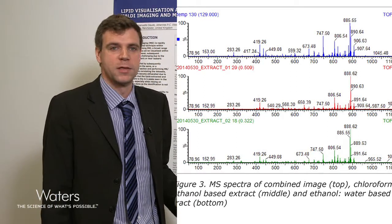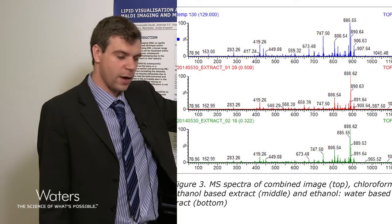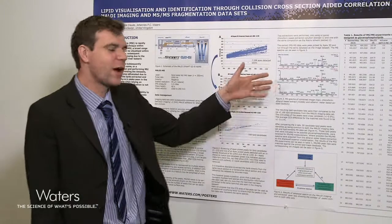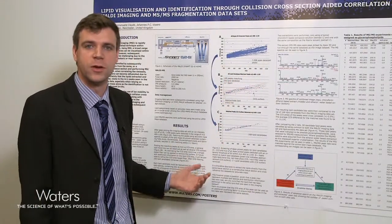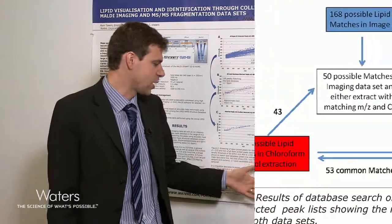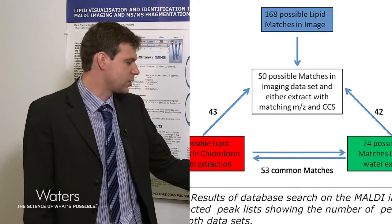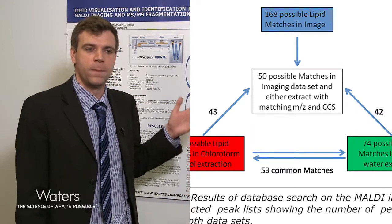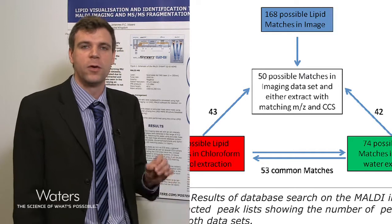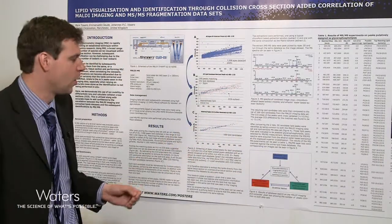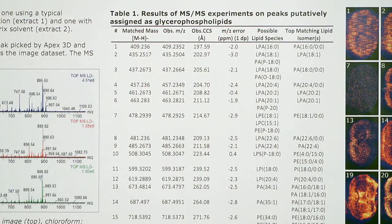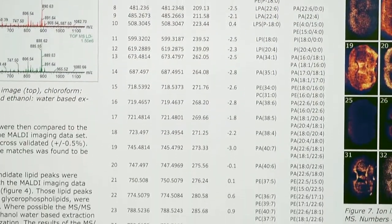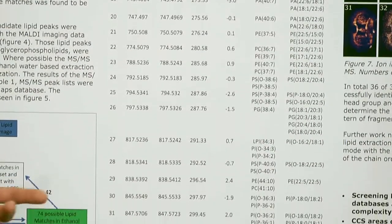Having extracted the lipids, we ran them by MS/MS. At the top we have the imaging MS spectrum, and below that extract 1 and extract 2. We then ran the extracts against the same database using the same procedure as for the imaging data set. In extract 1 we had 72 potential lipids and in extract 2 we had 74 potential lipids. Comparing these against our imaging data set by accurate mass and also by collision cross-section area, we ended up with 50 potential matches, from which we obtained a list of 38 potential glycerophospholipids, subsequently identified by MS/MS, resulting in a total of 36 lipids being identified.